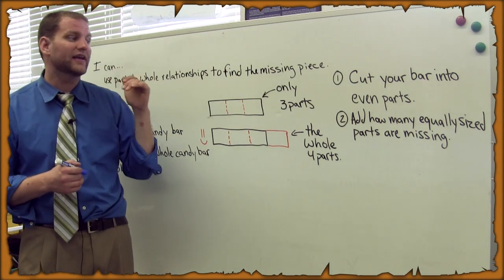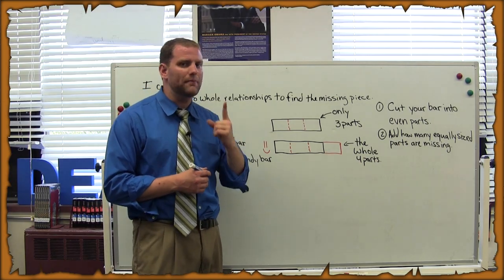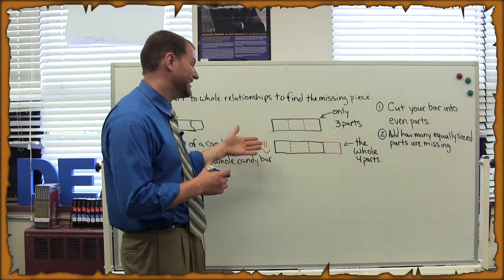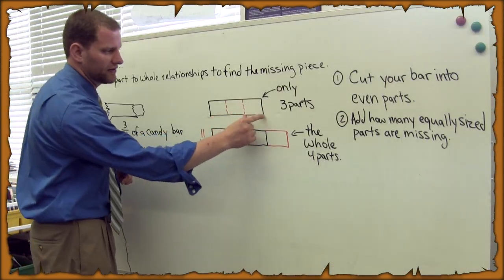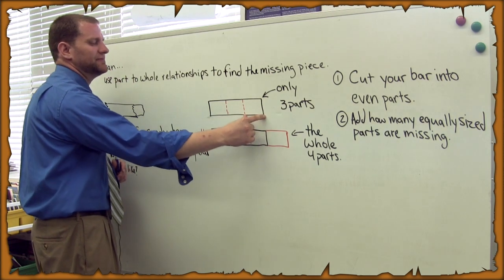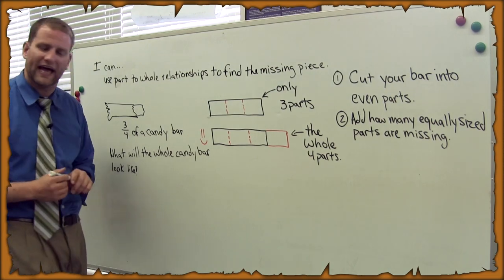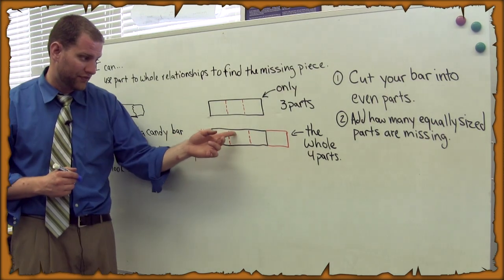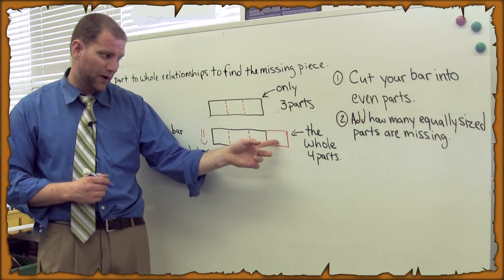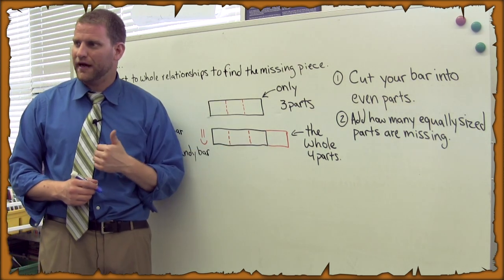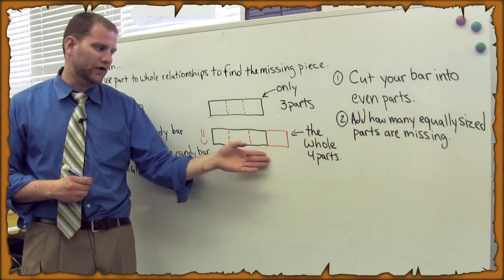After I cut it into even pieces, I figured I only need one more part in order to get to the full candy bar. So I took a part that was the same size and put it next to the other part I had. So now I have the three parts that were given to me, the one part that was eaten by my student, and I created the whole candy bar again.